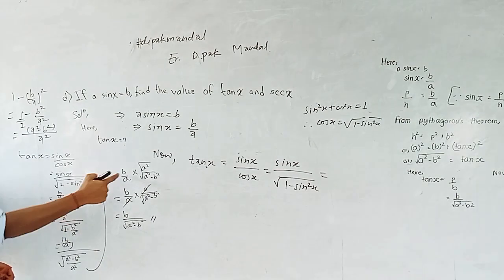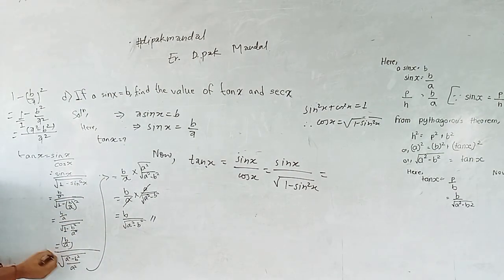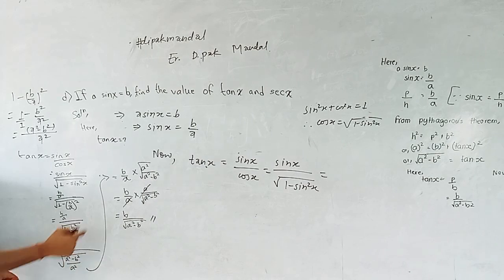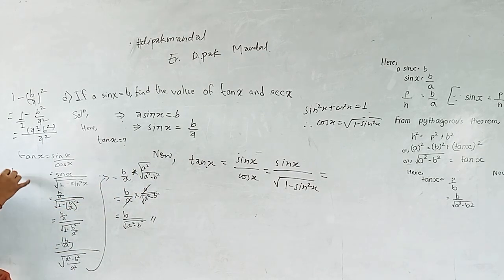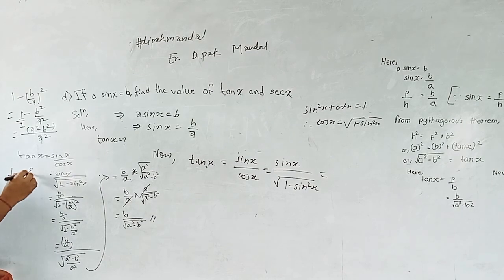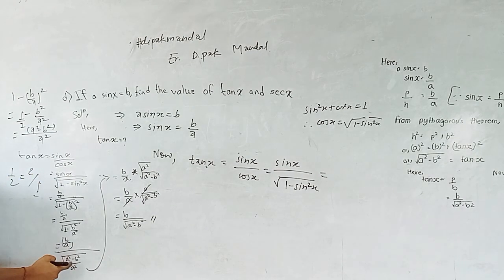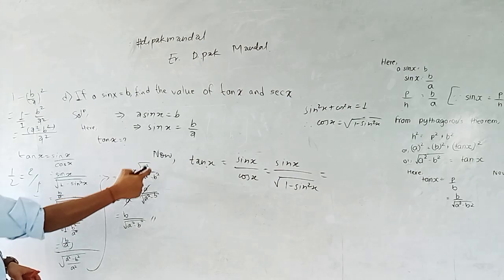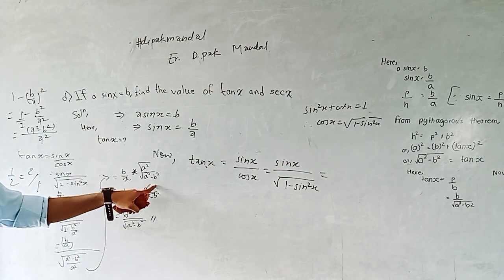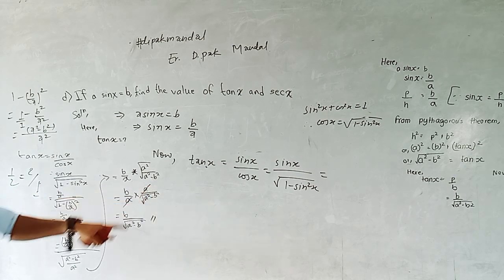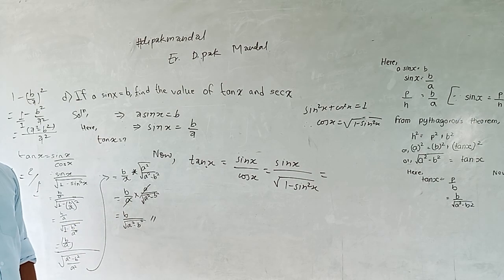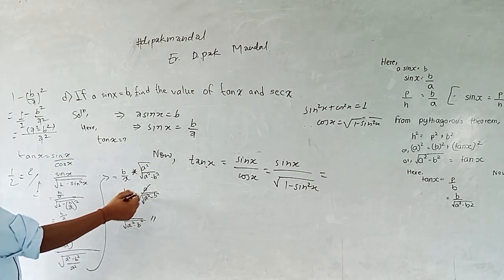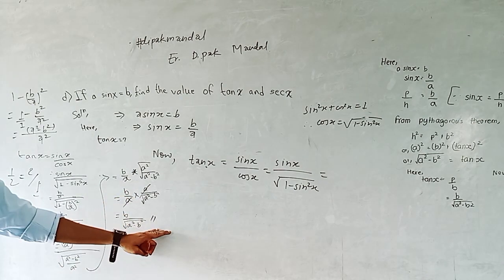We have b by a into the root of a squared by a squared minus b squared. That gives us tan x equals b divided by root of a squared minus b squared.